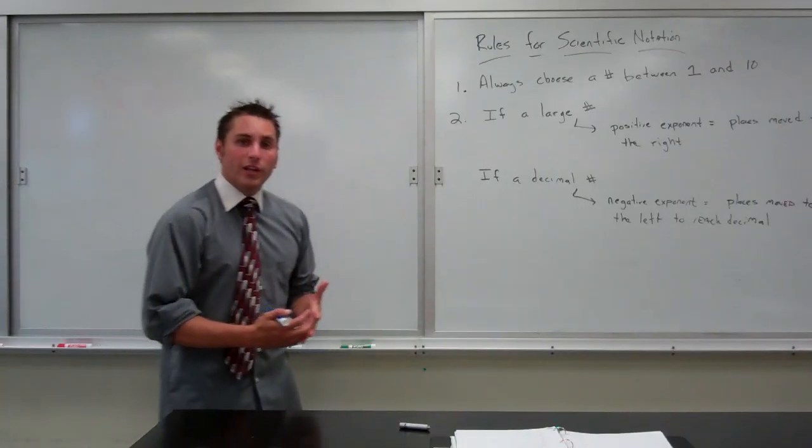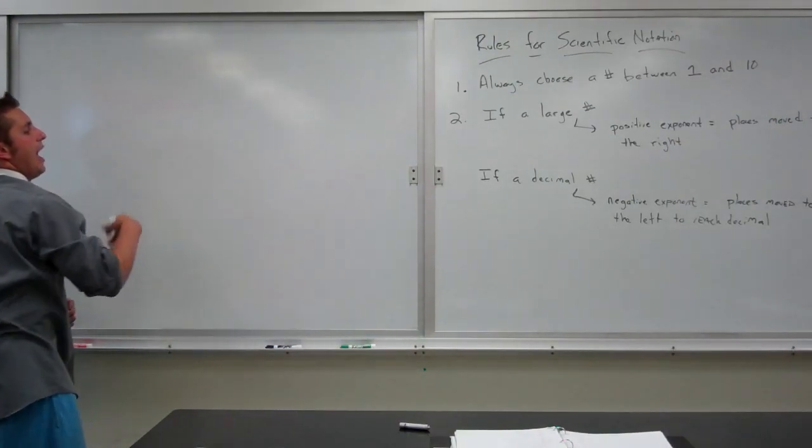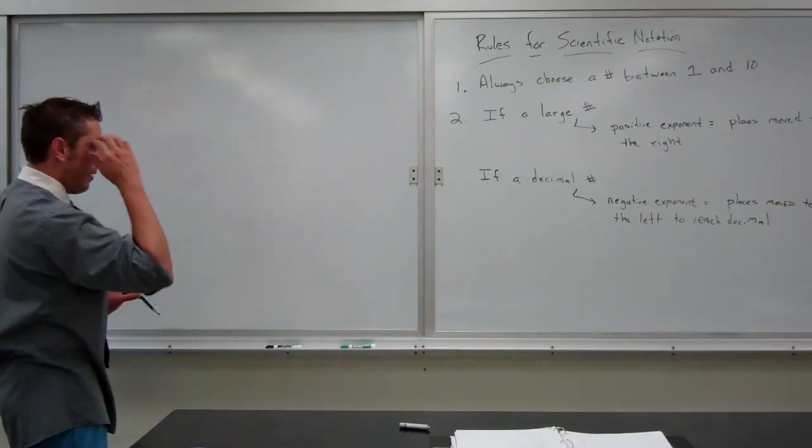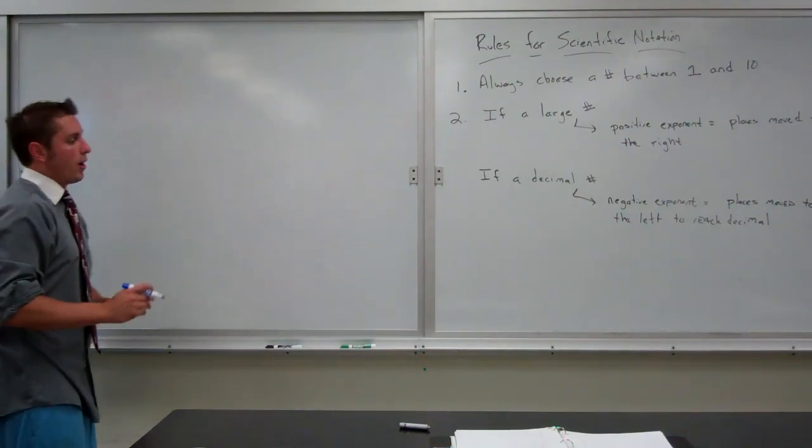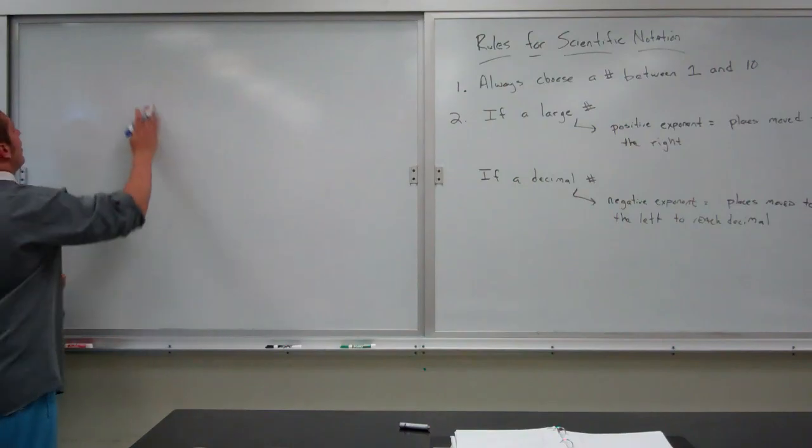If we take a look at a few examples of these, let's take a look at 2 where we're working with a large number, and then 2 if we're working with a decimal. For instance...